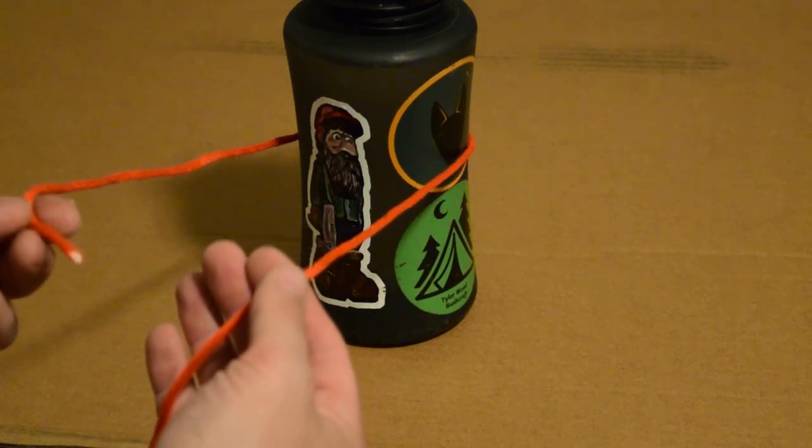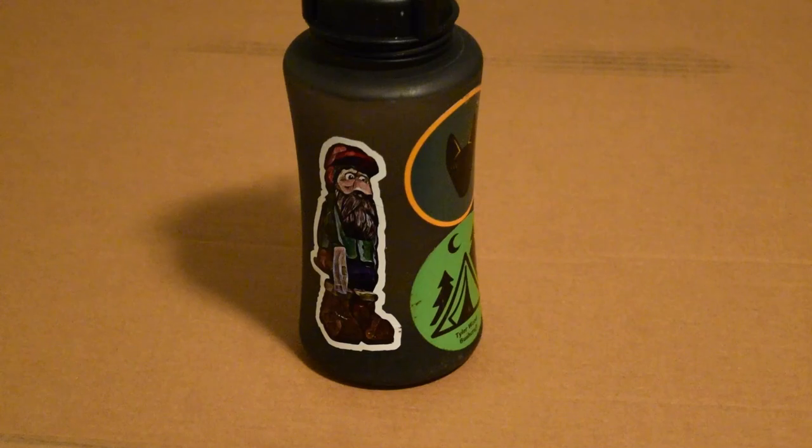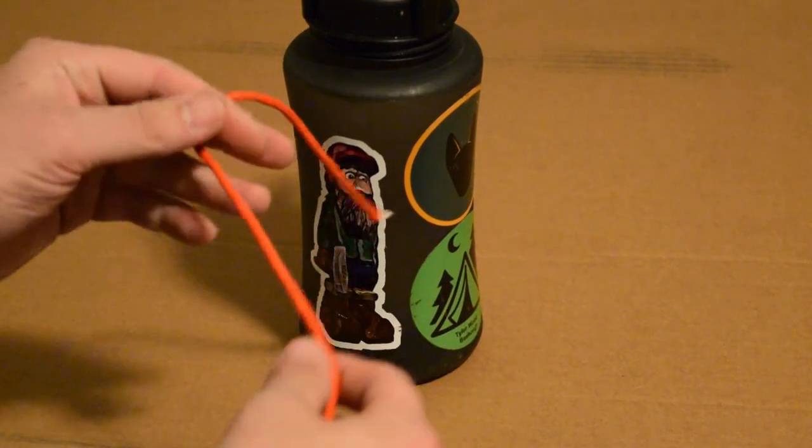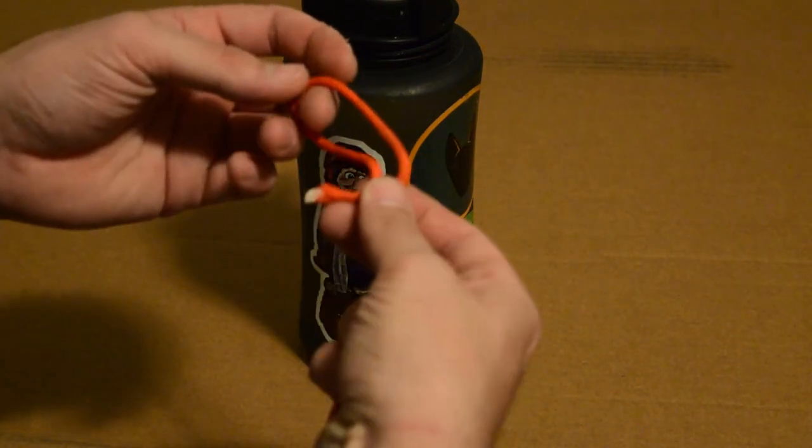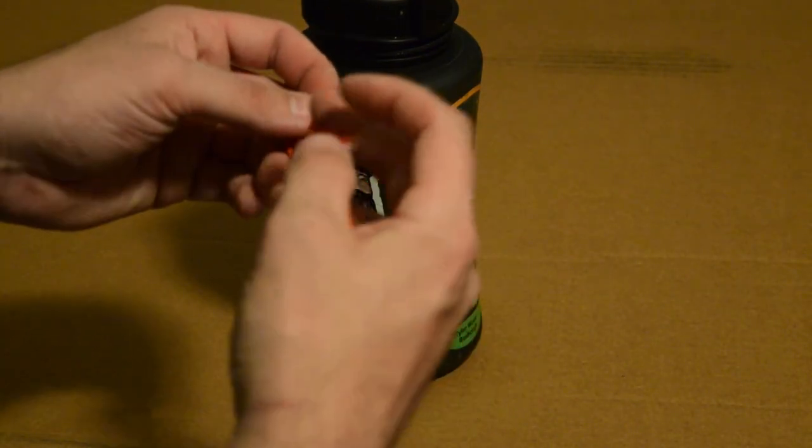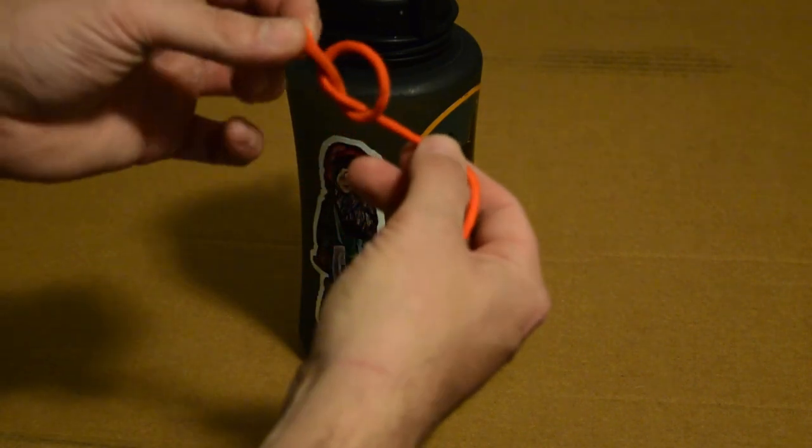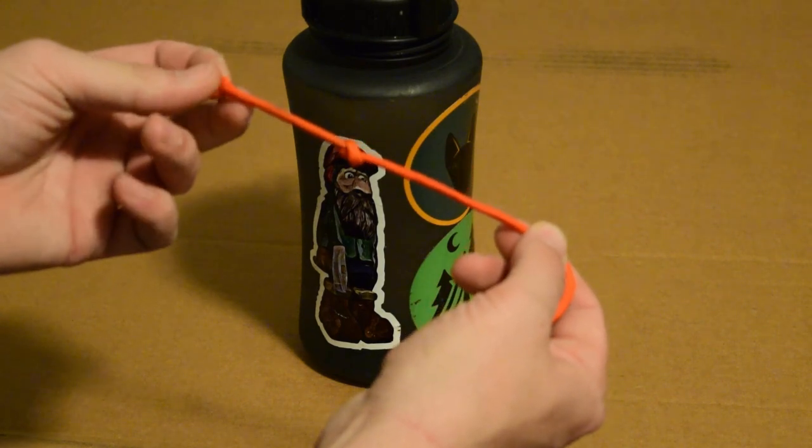Alright, so our second knot is going to be a jam knot, and I believe it's called the Canadian jam knot. So what we're going to do is just make a nice simple overhand knot at the very end of the paracord, and you want to pull that tight.